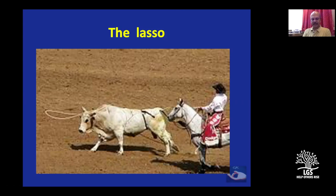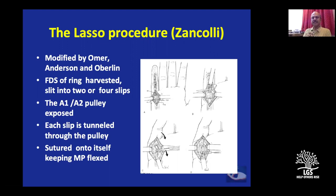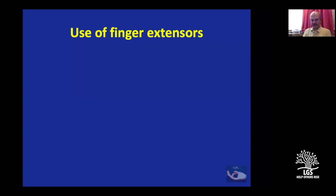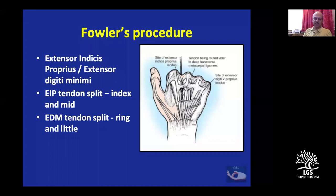The lasso procedure, described by Zancolli, also uses the flexor digitorum superficialis, split into four and inserted through the A1 or A2 pulley — each slip is tunneled and sutured to itself. This brings about a weak flexion of the MCP joint to stabilize it so that extension can occur through the long extensors.